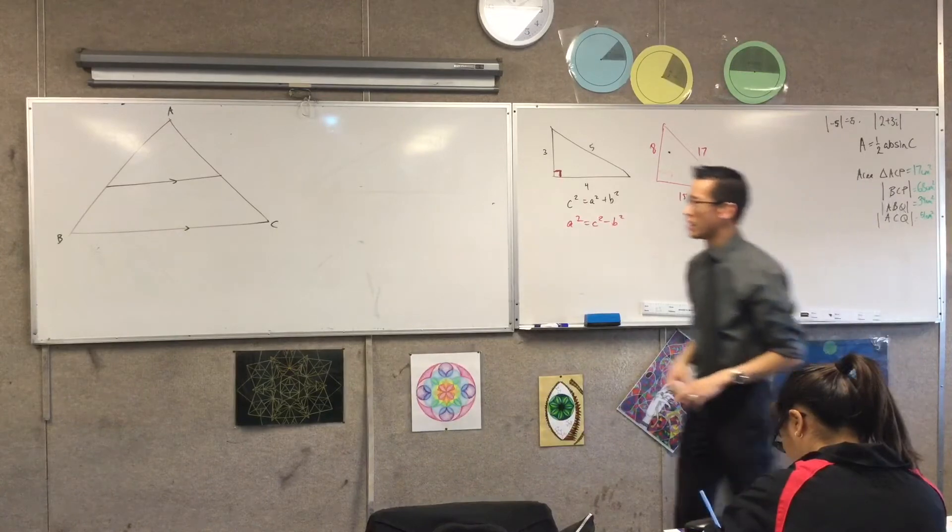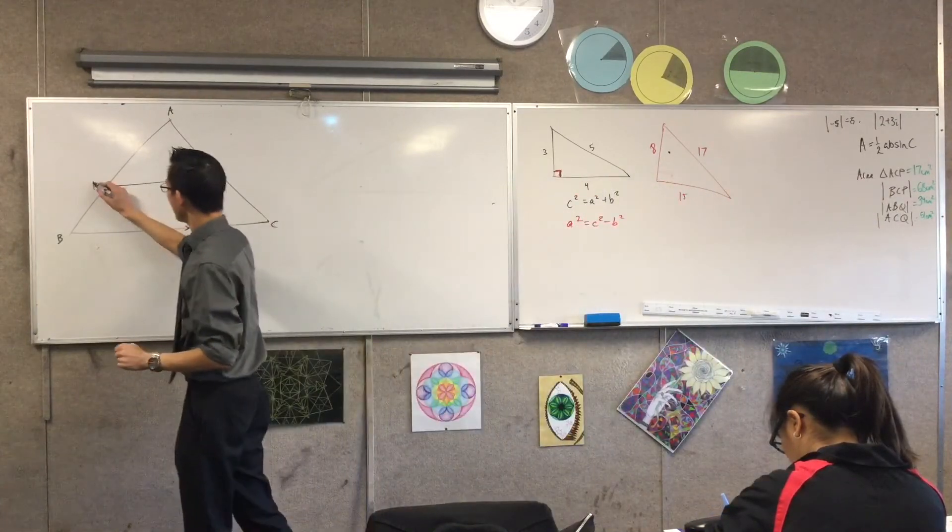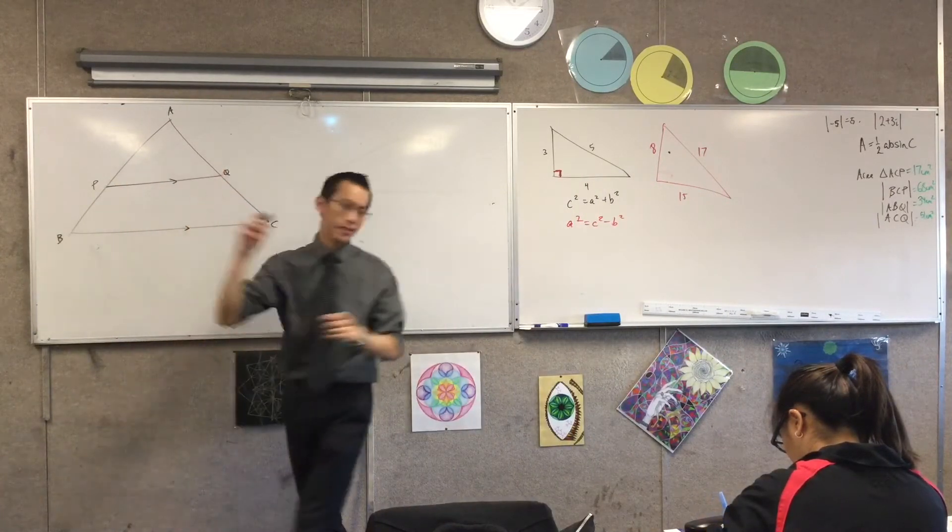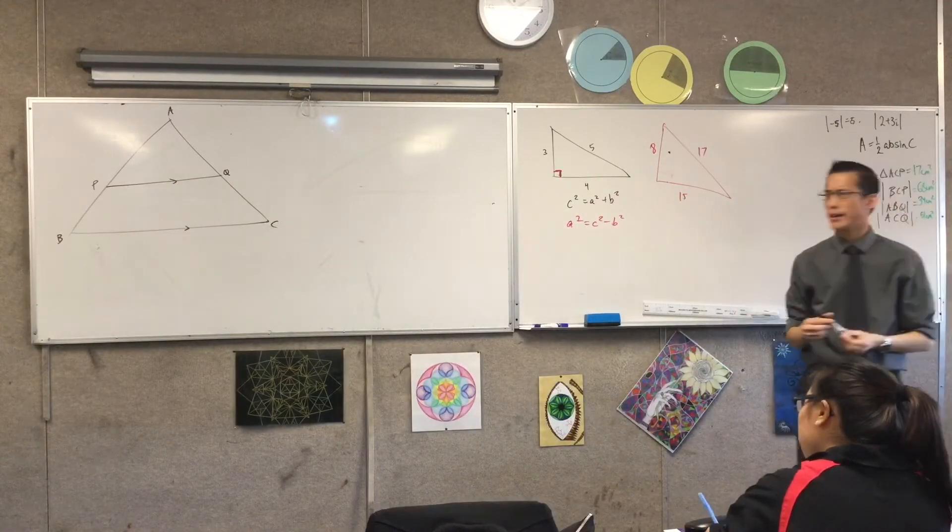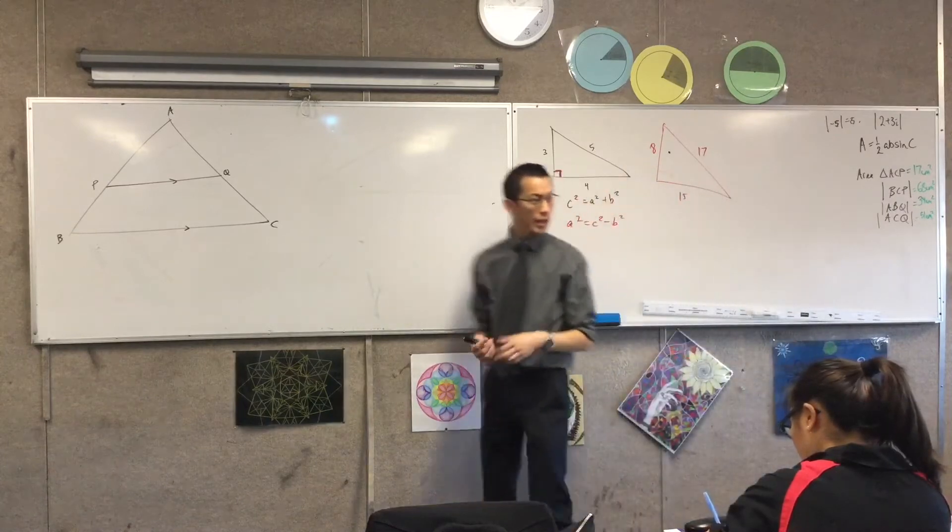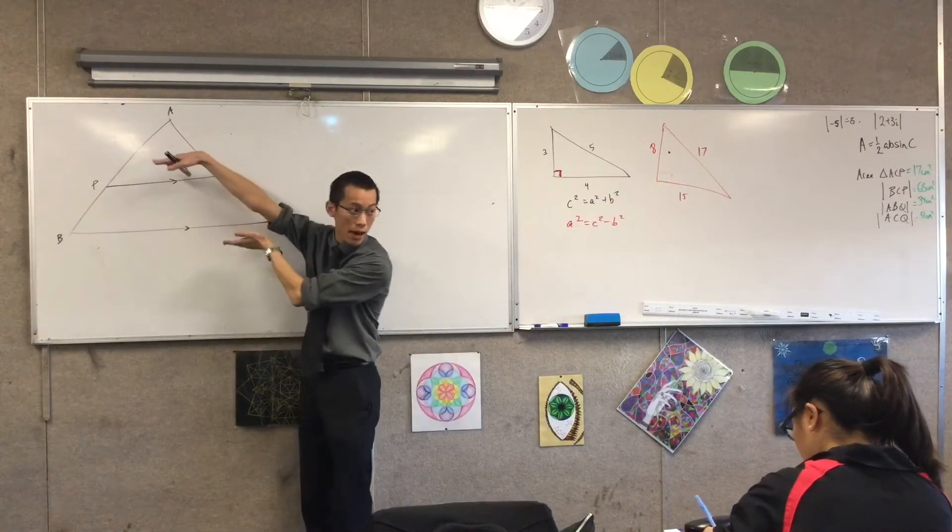Now, once you've drawn this in, we should give it a name, let's call it, say, PQ. Okay, in this bottom part of the shape, you can see, what shape is that at the bottom, the bottom half of this? It's a trapezium, very good, so you see parallel lines.